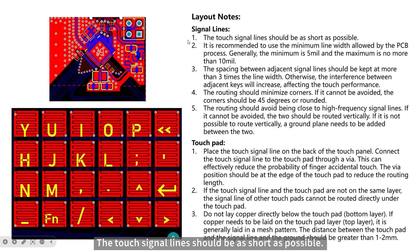Signal lines: The touch signal lines should be as short as possible. It's recommended to use the minimum line width allowed by PCB process. Generally, the minimum is 5mm and the maximum is no more than 10mm.